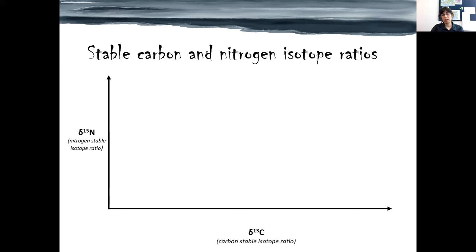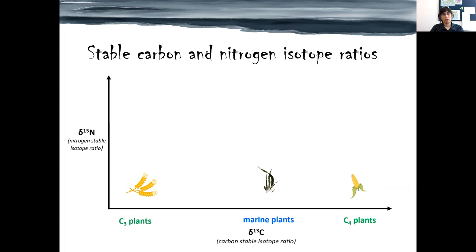Different plants have different carbon isotope ratios because of different photosynthetic pathways and also carbon sources. For example, wheat has a much lower stable carbon isotope ratio than maize. Consumers of plants will have slightly higher nitrogen and carbon stable isotope ratios than their food, so a sheep consuming wheat would plot slightly above its diet. By comparison, an alpaca consuming maize would have a higher carbon isotope ratio than the sheep.